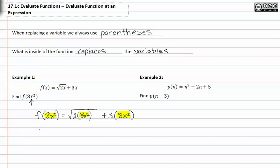So simplifying, the function f(8x²) is equal to the square root of 16x² plus 24x².